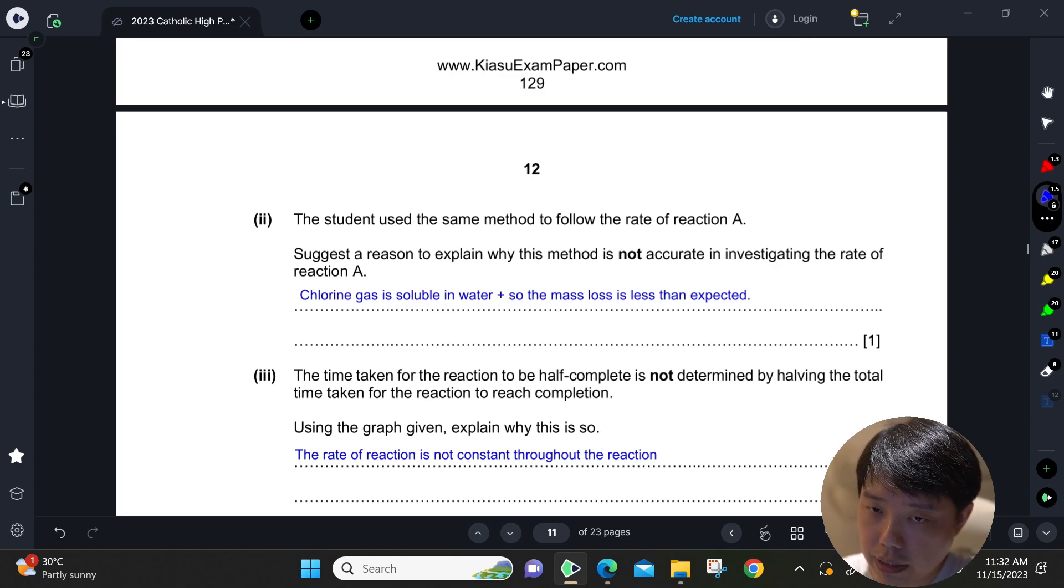The only difference is that instead of oxygen gas, you get chlorine gas. But chlorine gas, as you know, is soluble in water, so the mass loss is less than expected. Obviously some of it might still be lost into the surrounding, but a large portion of it actually dissolves in the water as it is evolved, so the mass loss will be less than expected.